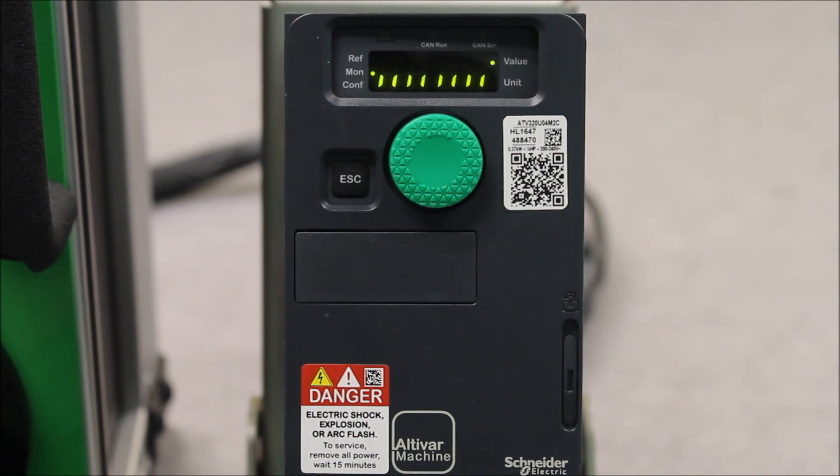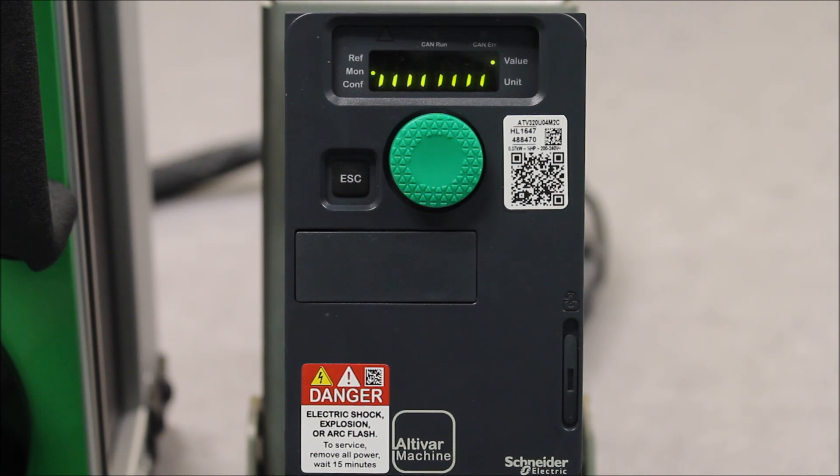Same thing with DI2, DI3, 4, 5, 6, and so on. That's basically how you can tell whether your digital inputs are getting a signal or not, and that might be a good tool to know if your run command is coming in, if you have a wiring problem, if it's a programming issue, whatever have you.